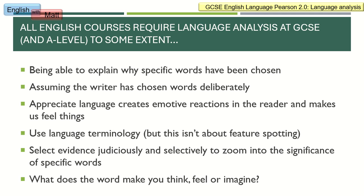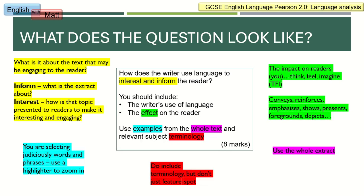For Pearson 2.0, this is what Paper 1 Question 3 will look like. I've colour-coded the question so we can break it down — regular viewers of my channel will know I like breaking things down and seeing how it all works together. Starting at the bottom: we've got to look at the whole text, use terminology if we know it rather than just feature spot, and make references to the text itself — that should be relatively straightforward.